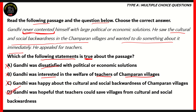The correct answer is option D: Gandhi was hopeful that teachers could save villages from cultural and social backwardness. You can find that by looking at both the second and third statements — he saw the cultural backwardness and wanted to do something about it, and the action he took was to appeal for teachers. This gives us the connection that teachers would help villages save themselves from cultural as well as social backwardness. So option D is the true statement about the passage.